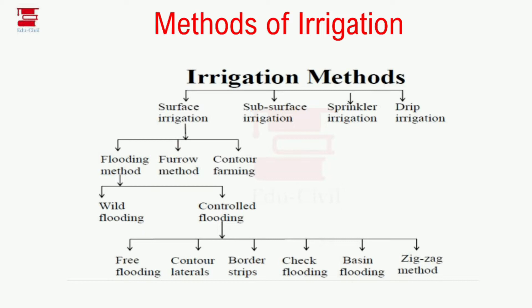The 6 types of controlled flooding are: free flooding, contour laterals, border strips, check flooding, basin flooding, and the zigzag method. The first thing we have is the surface irrigation method, under the flooding method.